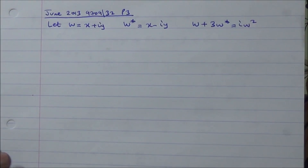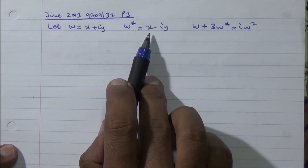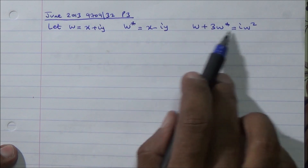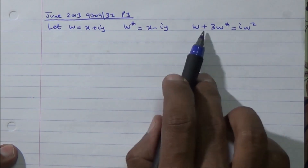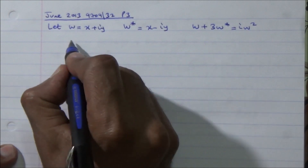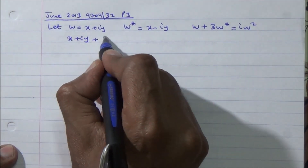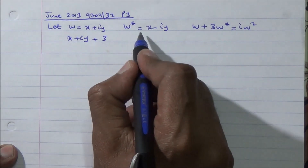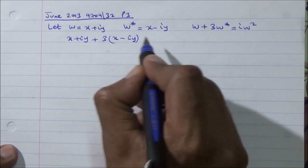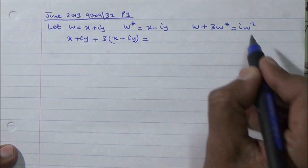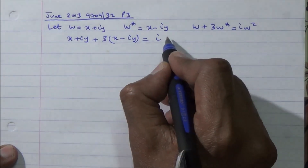For this question, we let w equal x plus iy, and the conjugate is going to be x minus iy. We're going to use the equation: w plus 3w* equals iw squared. So that's x plus iy plus 3 times x minus iy, equals i times x plus iy squared.